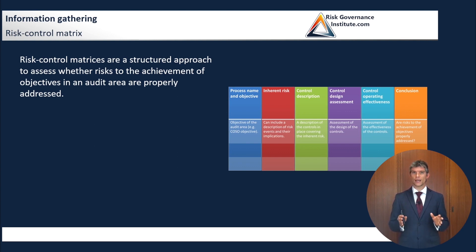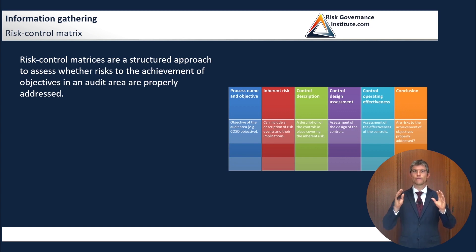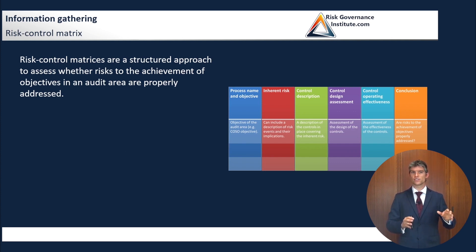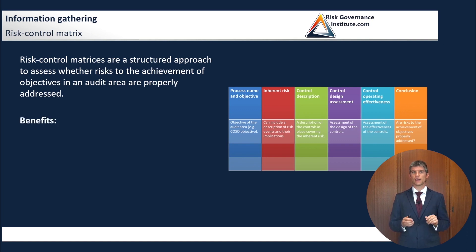In risk control matrices, you always try to start with your objectives and risk, and so it's a very focused kind of audit program. Risk control matrices are a structured approach to assess whether risks to the achievement of objectives in an audit are properly addressed. We're going to see how to build this kind of matrix, but I'm going to go through the benefits first.